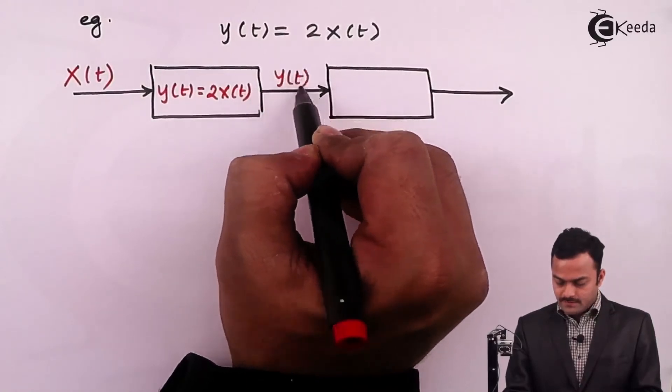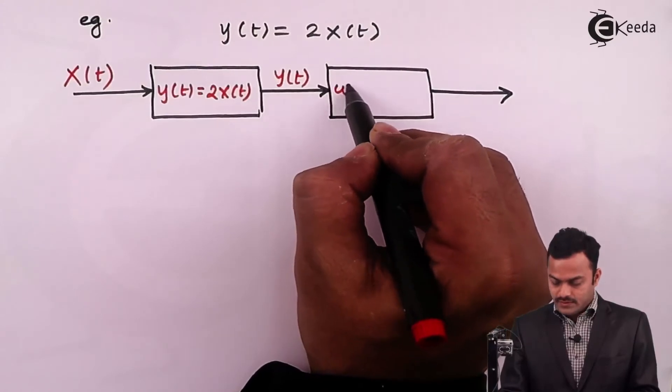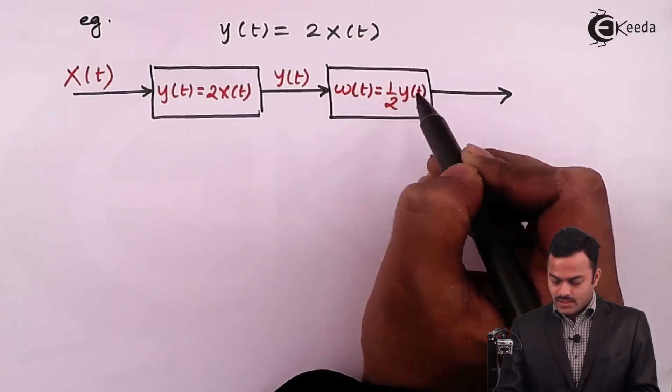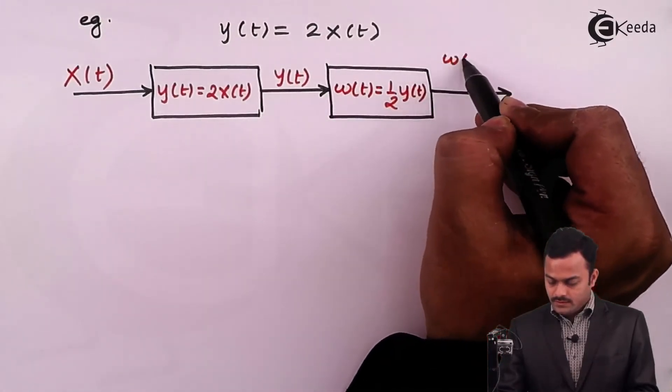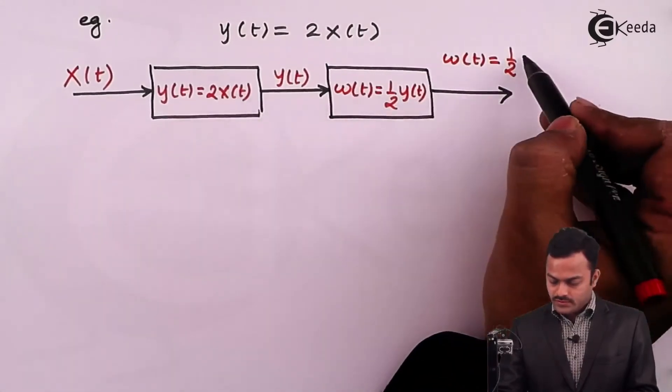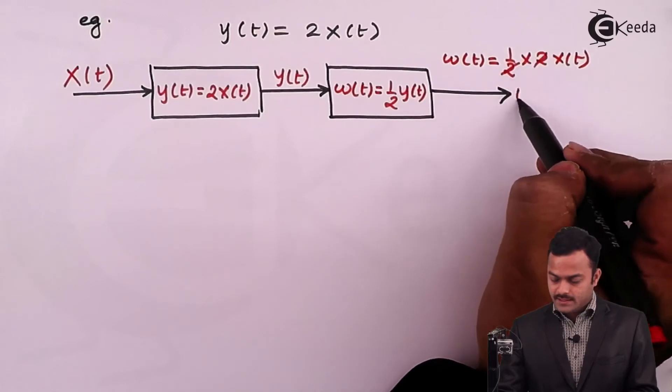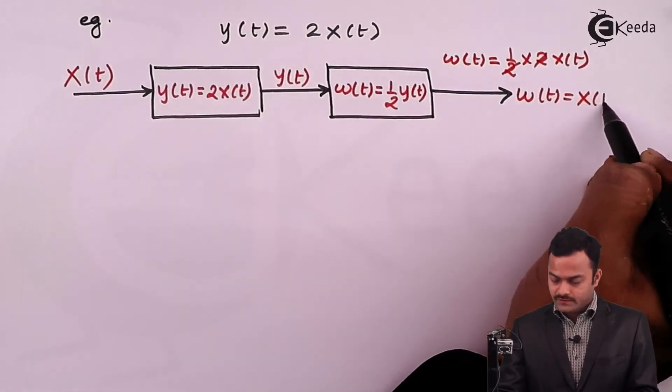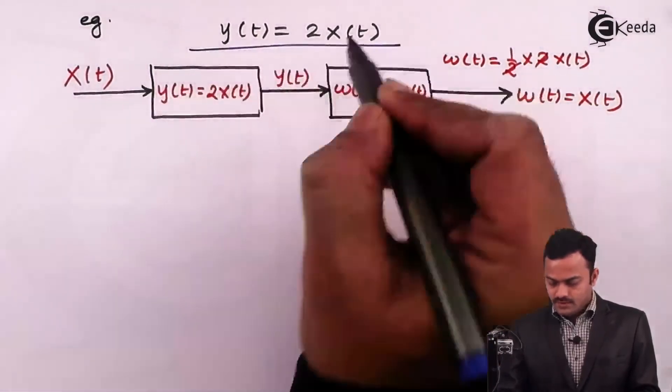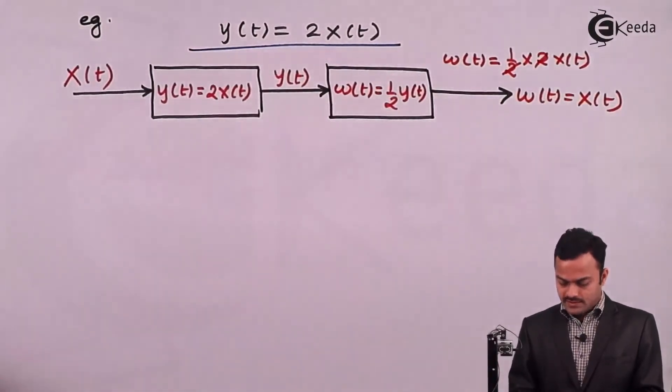So we will get y of t like this, and this y of t needs to be passed through one more system which will give the signal w of t, which should be half y of t. So if I do this, in the end w of t will be half, and y of t is 2x of t. Two will get cancelled, in the end w of t will reproduce x of t. So I can consider this system will be having invertibility property.